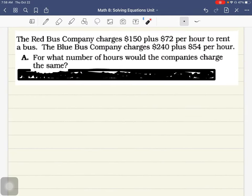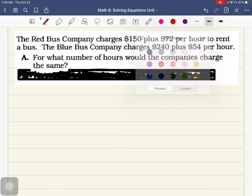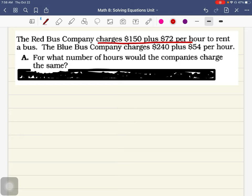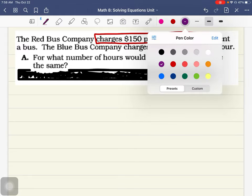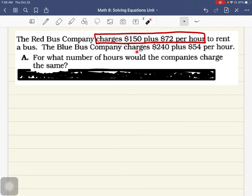So it says, let's read and annotate. The red bus company charges $150 plus $72 per hour to rent a bus. So red charges $150 plus $72 an hour. Then it says that the blue bus company charges $240 plus $54 an hour. So blue charges $240 plus $54 per hour. What number of hours? There we go. There's our end goal. What number of hours would the companies charge the same?